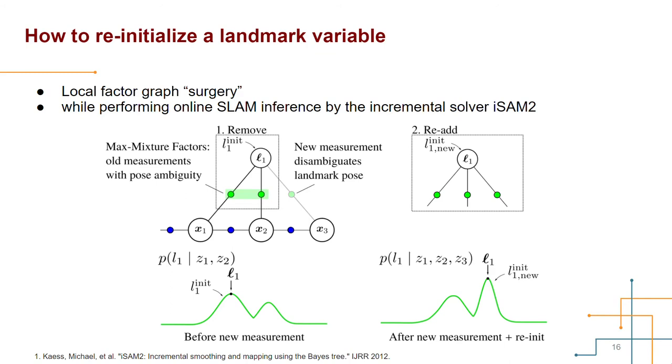I will first talk about how to re-initialize the landmark variable while keeping the online inference fashion by iSAM2. To do this, we perform a low overhead local surgery to the factor graph. I will use this demo to walk you through the process. In this piece of factor graph, the landmark variable L1 is first initialized in the left mode, which is temporarily optimal after measurements Z1 and Z2. Suppose we now receive a new measurement Z3 that disambiguates the landmark pose, making the right mode dominant. To change the initialization and restart the optimization in the right mode, we can remove the landmark variable and its neighboring factors, and then add them back with L1 re-initialized in the right mode. After that, the hypothesis selections in the max mixture factors will be corrected immediately, and the solution will converge to the global optimum.